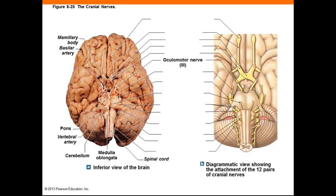The oculomotor nerve, number 3, is motor only and arises in the midbrain. It innervates 4 of the 6 extrinsic eye muscles and the intrinsic eye muscles that control the size of the pupil. The trochlear nerve, number 4, is the smallest. It also arises in the midbrain and is a motor only nerve. It innervates the superior oblique extrinsic muscle of the eye.